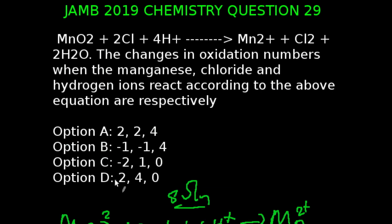Chlorine has changed from 0 to plus 1. Hydrogen has changed from 1 to 0. And so the correct answer to this question is minus 2, 1, and 0, which is Option C.